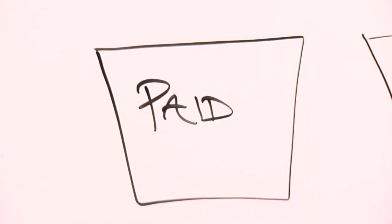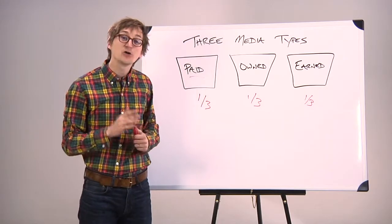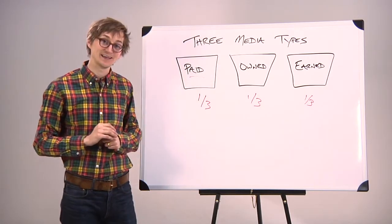So take a look, do you have one third paid, one third owned, and one third earned? If not, how can we increase the number of the one that's lagging behind?